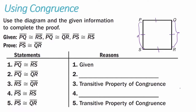Start by writing what you're given: line segment PQ is congruent to line segment RS, and line segment PQ is congruent to line segment QR. Notice that PQ is repeated in steps one and two, so we get rid of that middleman and say line segment RS is congruent to line segment QR, using the transitive property of congruence. We're also given that line segment PS is congruent to line segment RS. Between steps three and four, RS is repeated, so using the transitive property of congruence, we can prove that line segment PS is congruent to line segment QR.